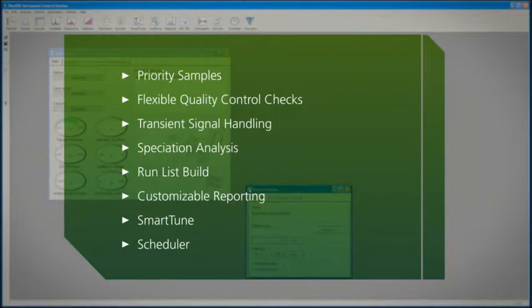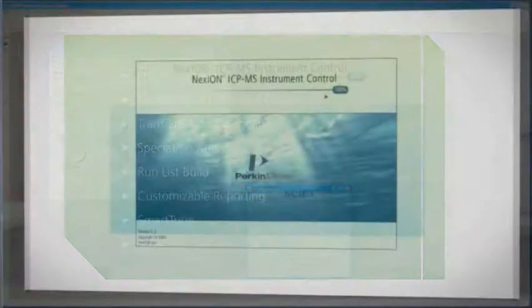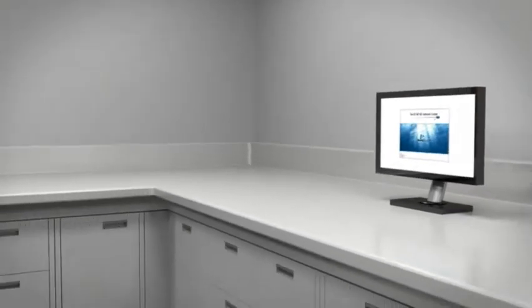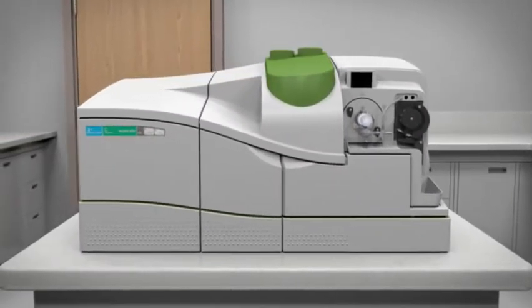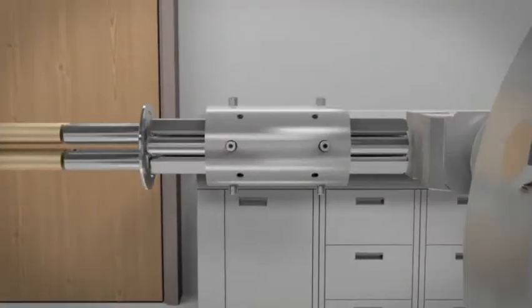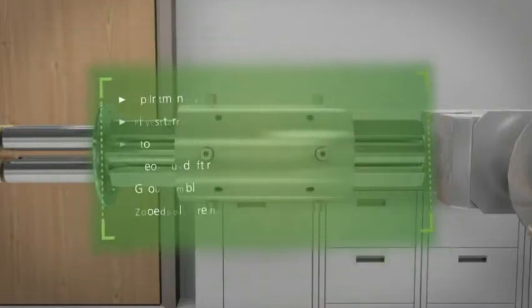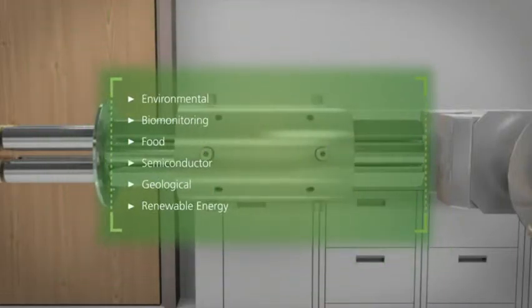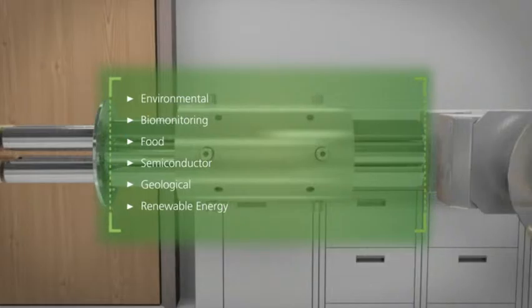The Nexion ICP-MS is fully field upgradable, meaning universal cell technology can be added to a base unit at any time. This enables the instrument to adapt to the expanding needs of a lab and remain future-proof, a long-term investment that can meet changing regulatory requirements and provide the lowest cost of ownership across a broad range of markets and applications.